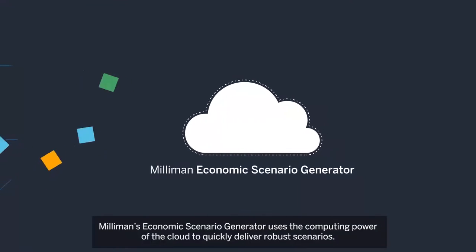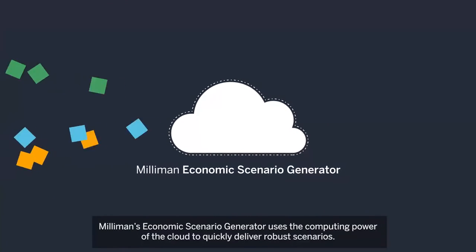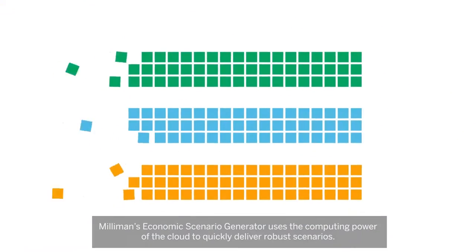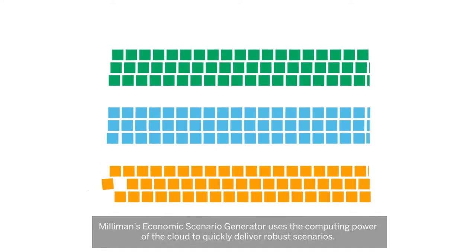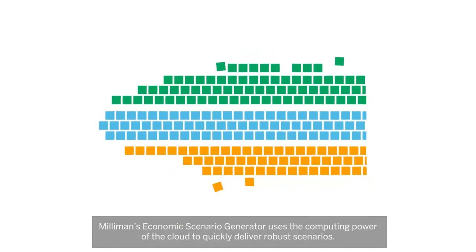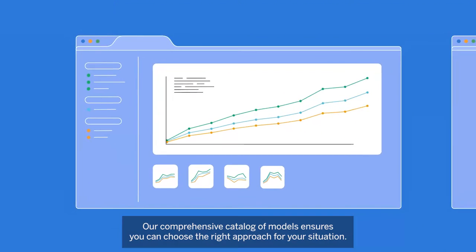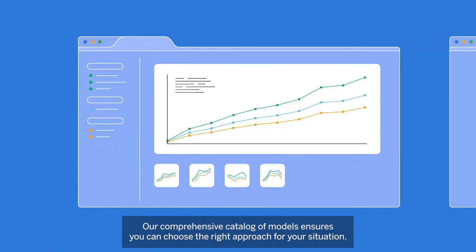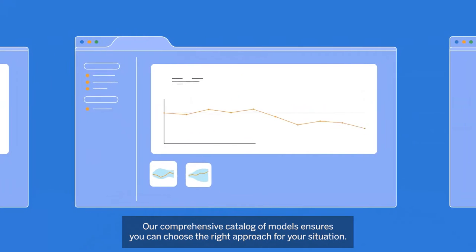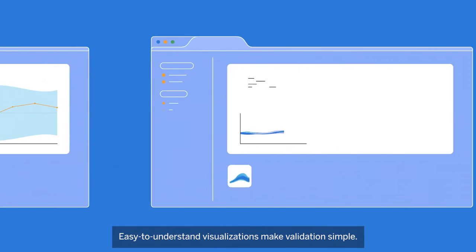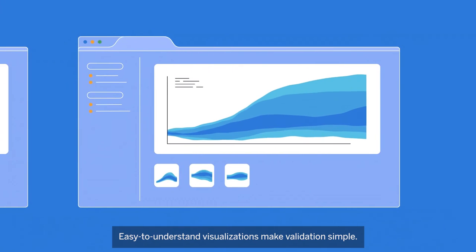Milliman's economic scenario generator uses the computing power of the cloud to quickly deliver robust scenarios. Our comprehensive catalog of models ensures you can choose the right approach for your situation. Easy to understand visualizations make validation simple.